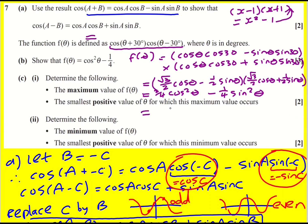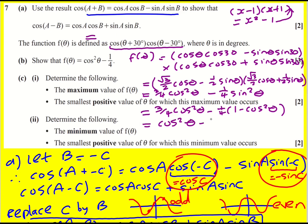We're nearly there. I just now need to replace sin²(θ) by 1 minus cos²(θ). I need to show enough reasoning here, so I'm going to get a plus quarter cos²(θ), which gives me overall cos²(θ), and I'm going to get a minus quarter — which is exactly what we're after.